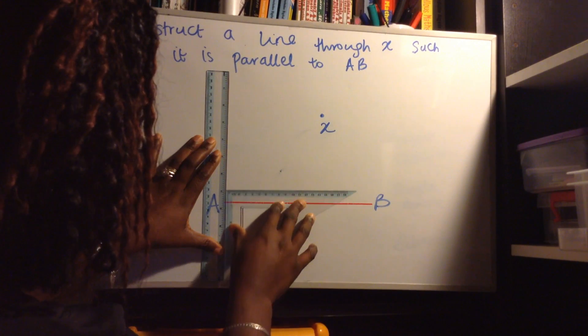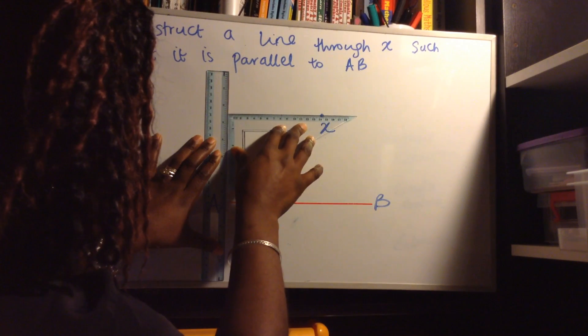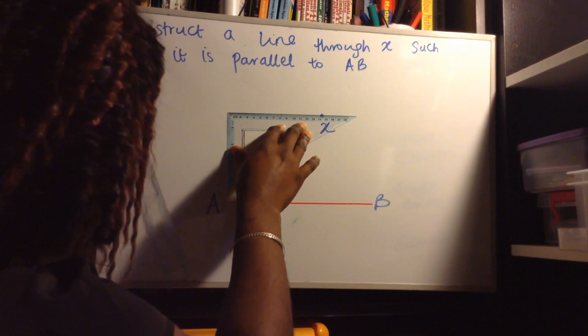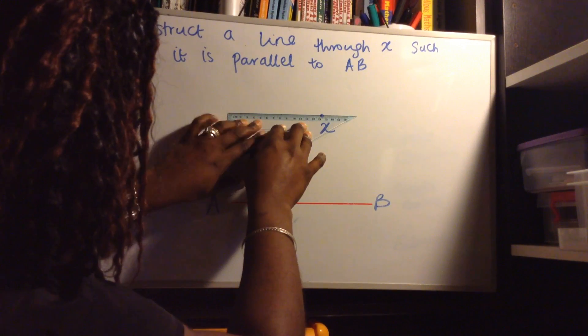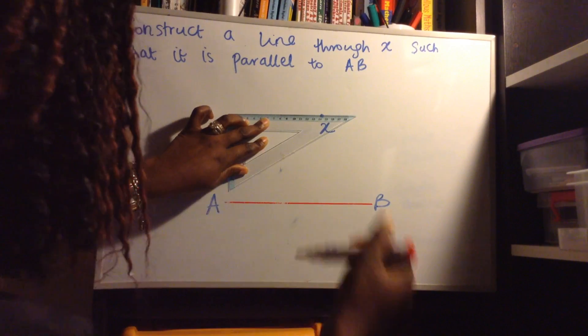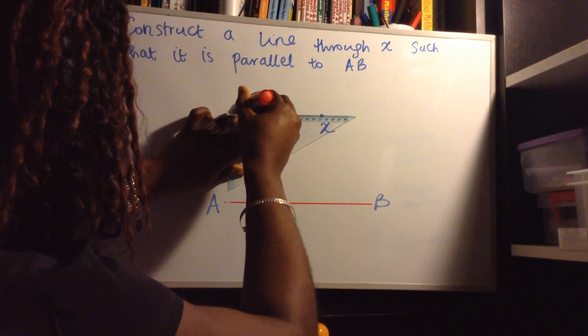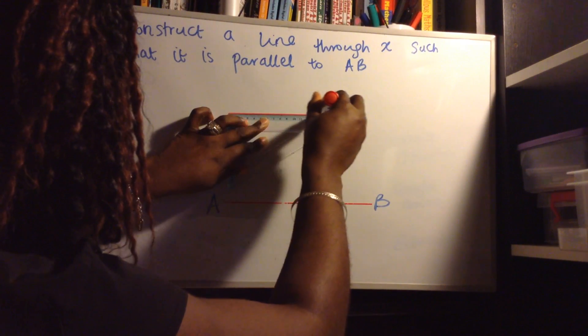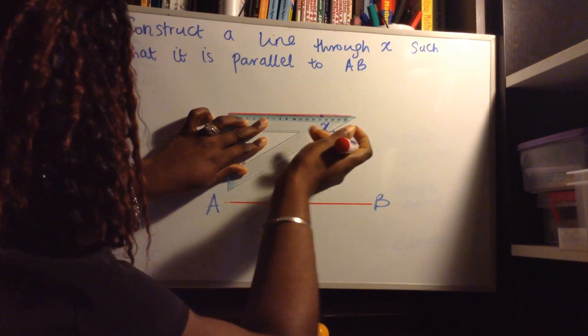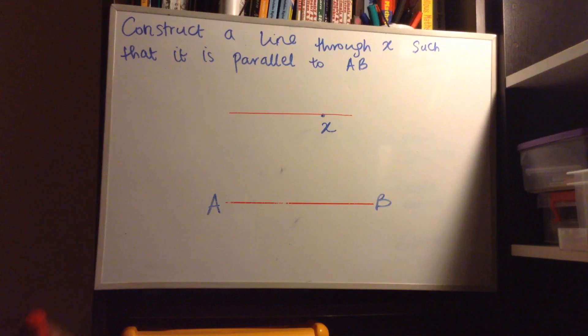And the next thing that we need to do is slide that all the way up to X. Once that is in place, we can get rid of the ruler. All that we need to do now is draw that line. Now I can take that off.